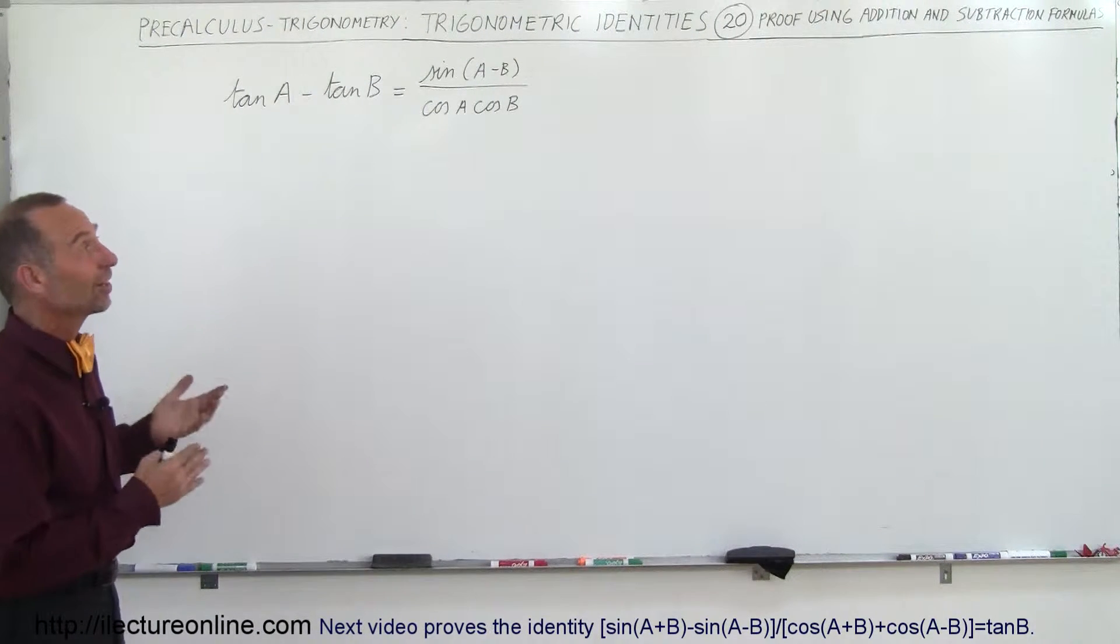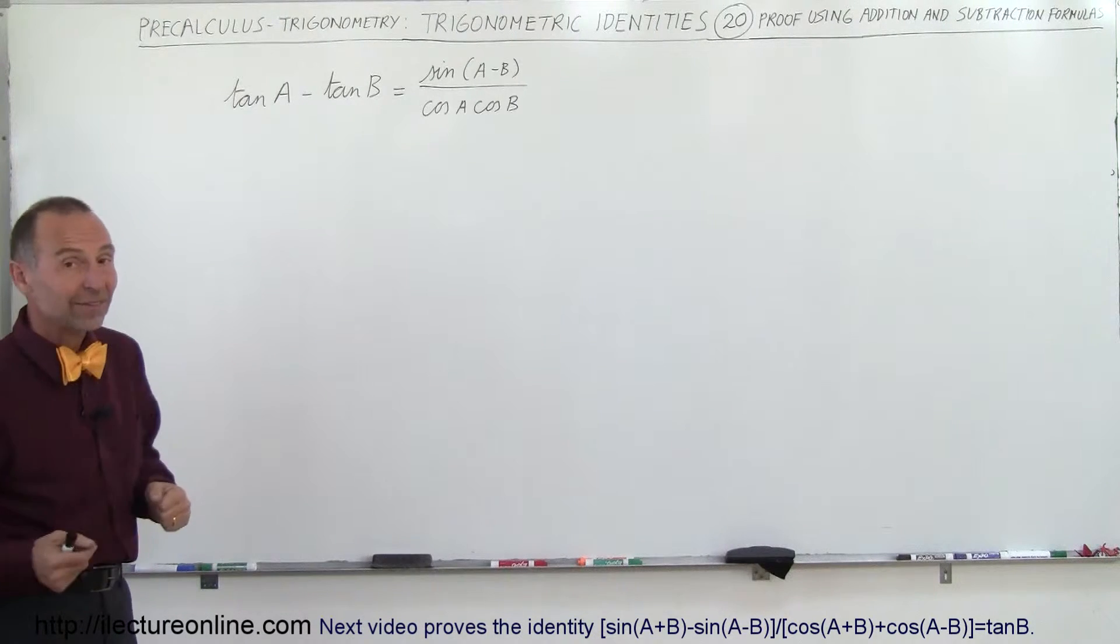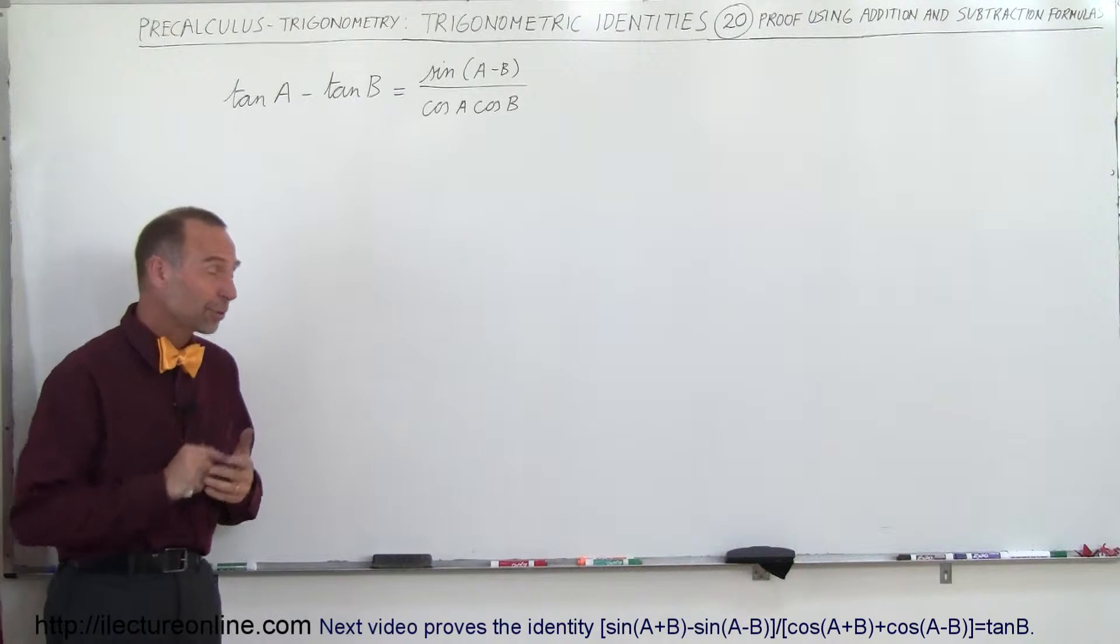Welcome to ElectronLine and here's another example of how we prove an identity. The left side should equal the right side, and of course with the identities that we've learned so far, we should be able to prove this.